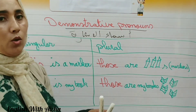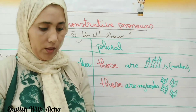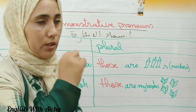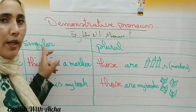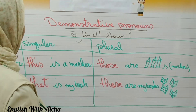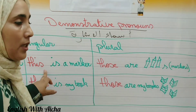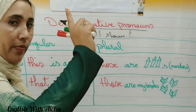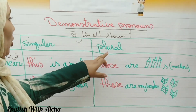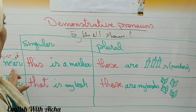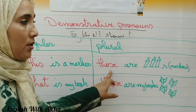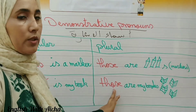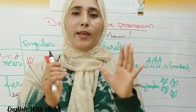So that's all for our lesson today. To recap: singular and near we use 'this,' singular and far we use 'that,' plural and near we use 'these,' and plural and far we use 'those.'